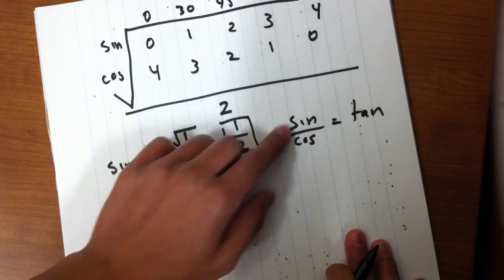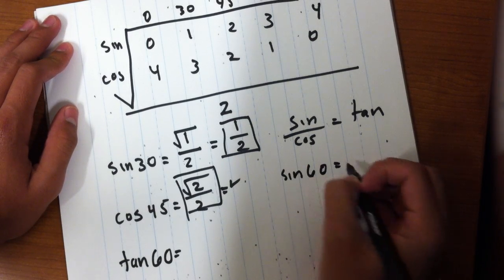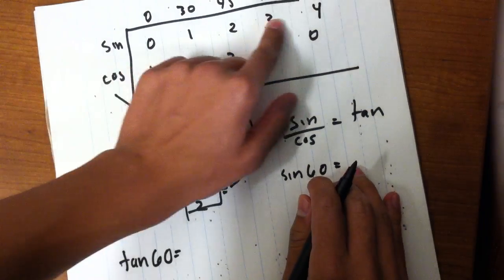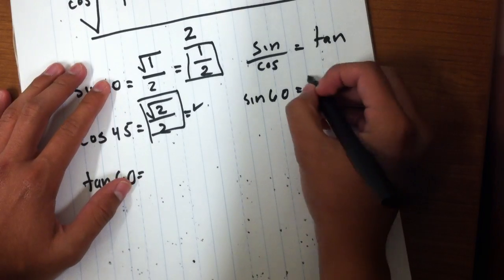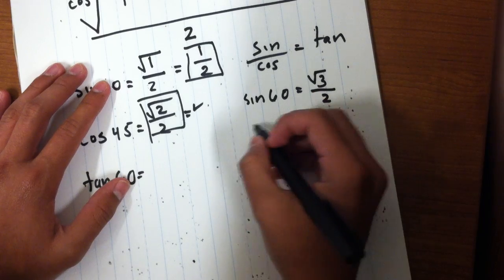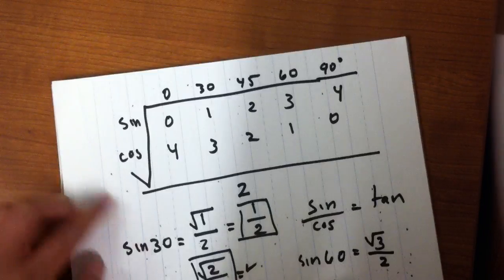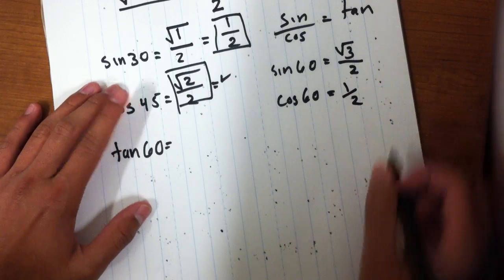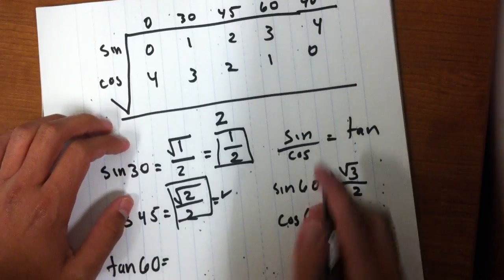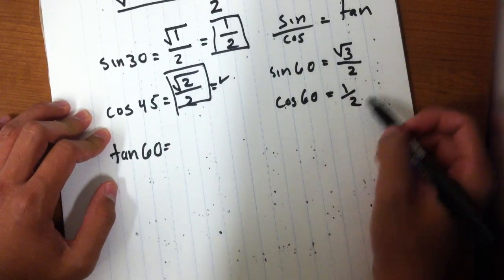We want to find tangent of 60. So first, we have to do the sine of 60. So sine of 60 is going to equal square root of 3 over 2. And cosine of 60 is square root of 1 over 2, which is just 1 half. And since we know this relationship between sine, cosine, and tangent, we'll just divide these two values.